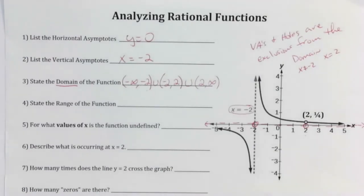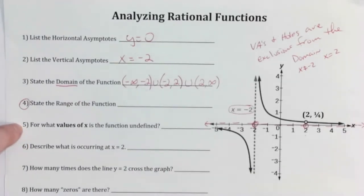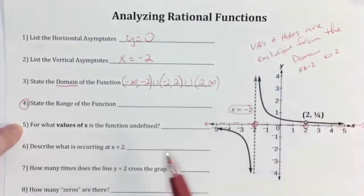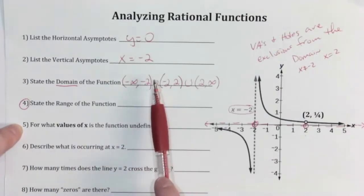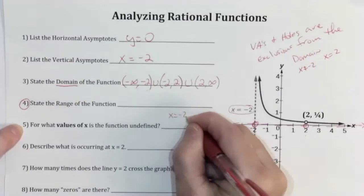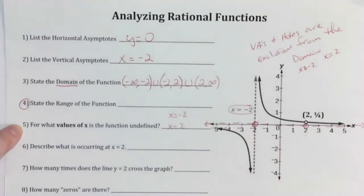On Monday we did domain of rational functions algebraically; now we're doing it from a graph. The next question asks for what values of x is the function undefined. This corresponds directly to the domain question — vertical asymptotes and holes are exclusions, meaning the function is undefined there. Whatever x-values you skipped over in your domain are your undefined x-values. The answer is x equals negative two and x equals two.